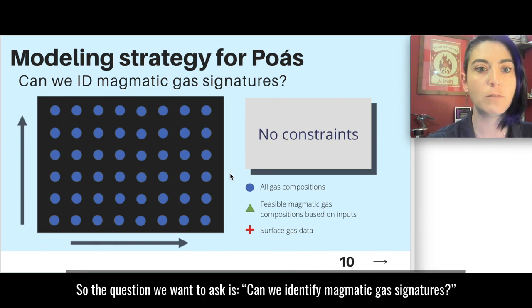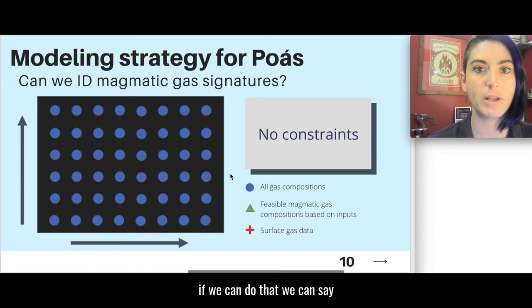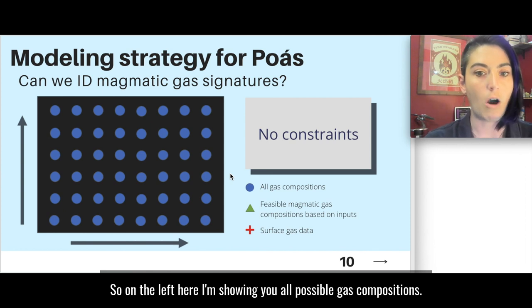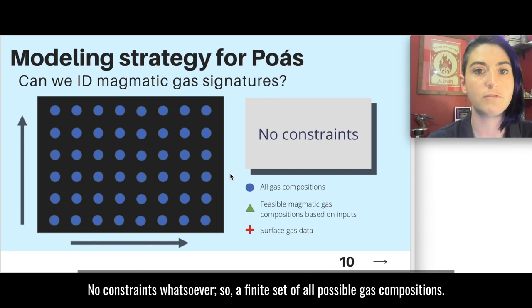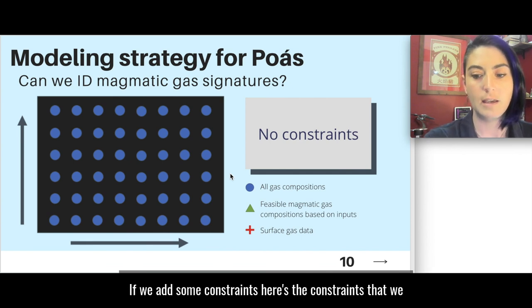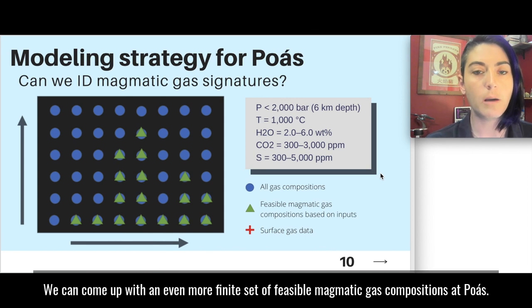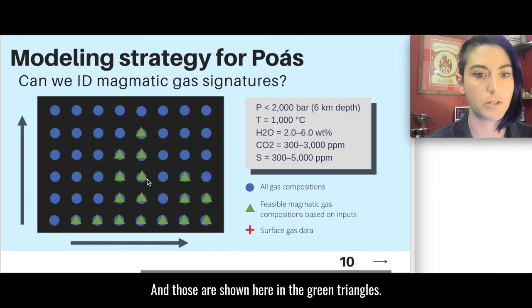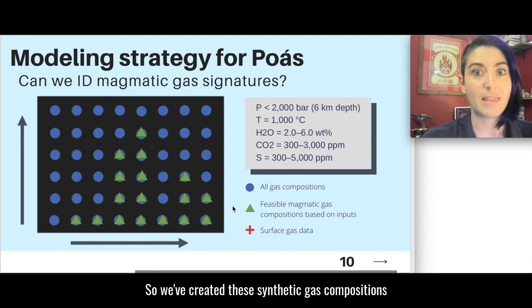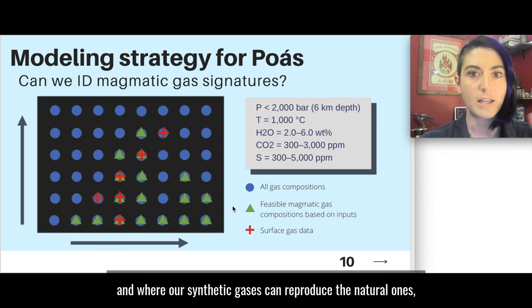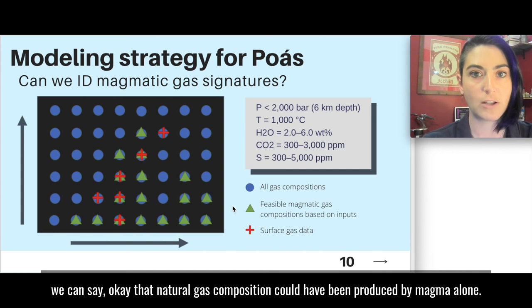So the question we want to ask is can we identify magmatic gas signatures? If we can do that we can say anything that's not a magmatic gas signature requires some other explanation. And so on the left here I'm showing you all possible gas compositions with no constraints whatsoever. It's a finite set of all possible gas compositions. If we add some constraints, here's the constraints that we used here. This is a very wide set of parameters. We can come up with an even more finite set of feasible magmatic gas compositions at Poas. And those are shown here in the green triangles. So we've created these synthetic gas compositions.